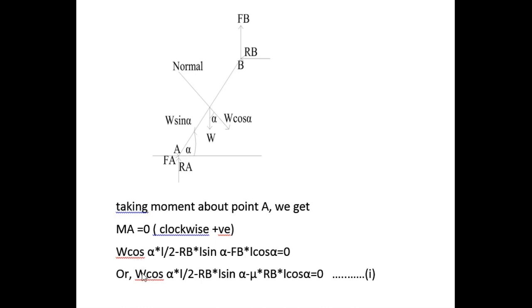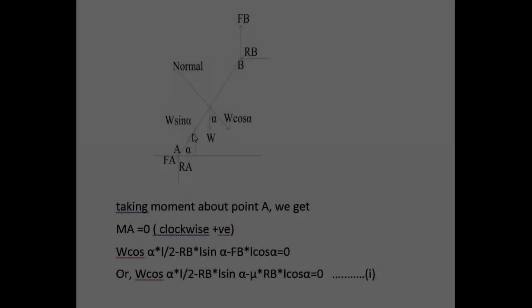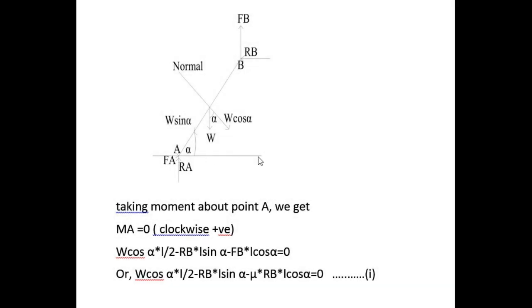The moment equation becomes: W cos alpha × (L/2) − RB × L sin alpha − μ × RB × L cos alpha = 0, where we have substituted FB = μ × RB. This friction force formula states that the friction force at any contact point equals the coefficient of friction times the normal reaction at that point.